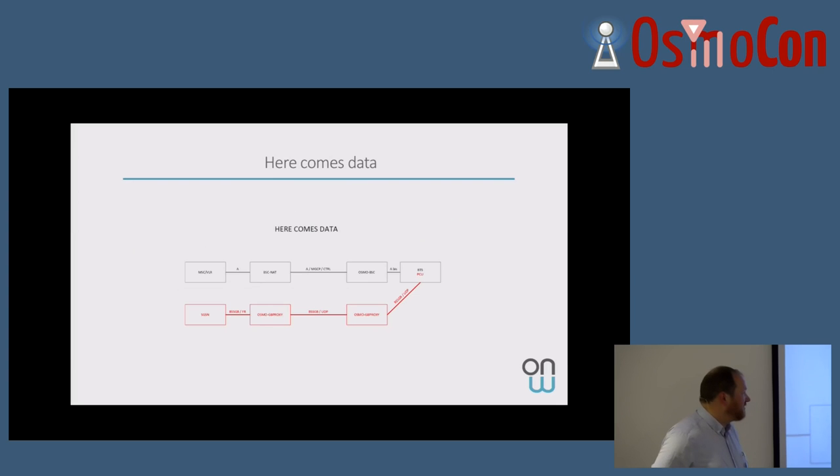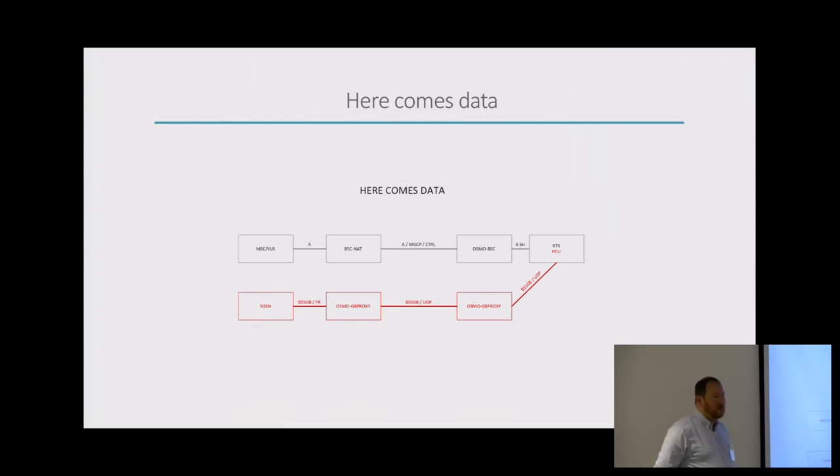Some words about data. Yeah, it's not the part I'm mostly proud of, and I'm going to tell you why. We have not done much there. The only thing that we have done so far is actually to introduce the concept of Osmo GB proxy. And the reason there was that the IP access BTS had some serious issues reconnecting if the VSAT link was gone. So the main job of the GB proxy is actually to reply to NS alive messages.